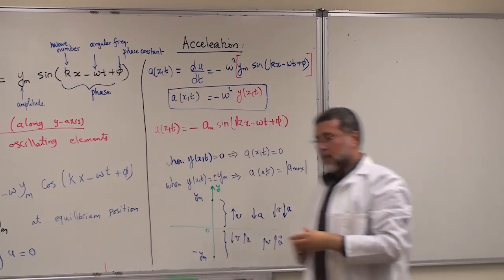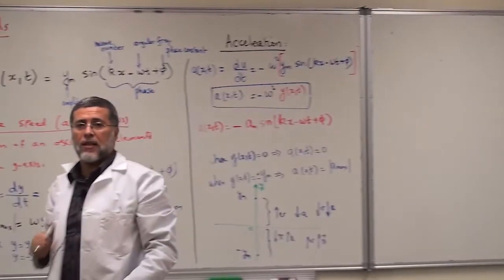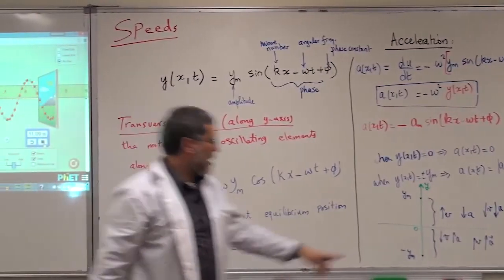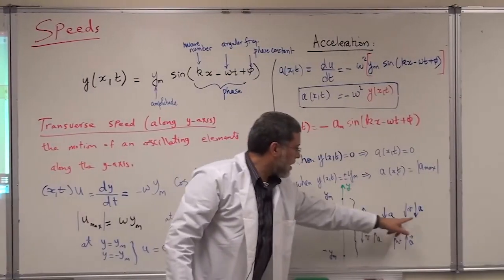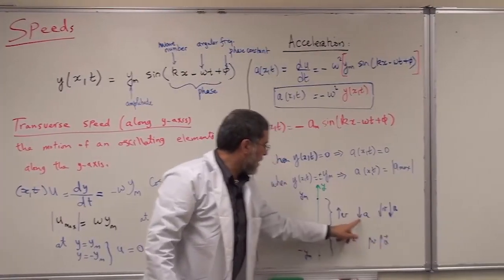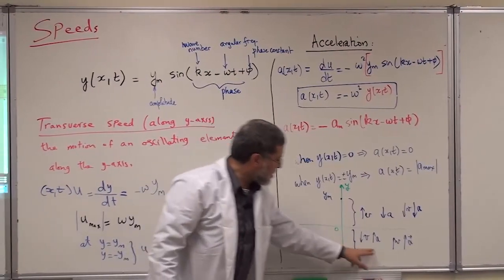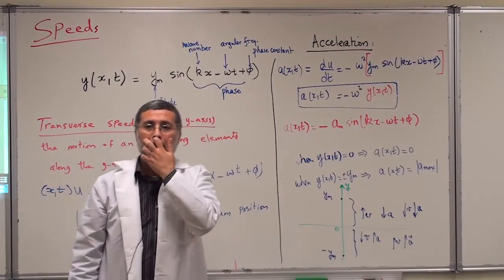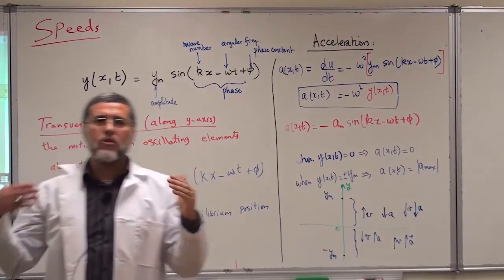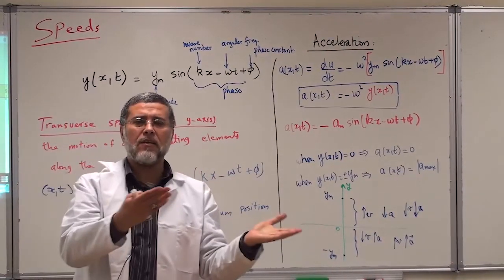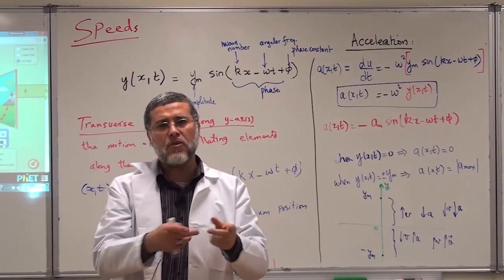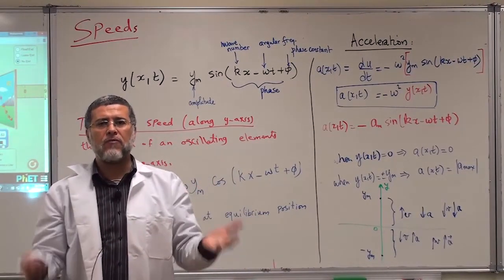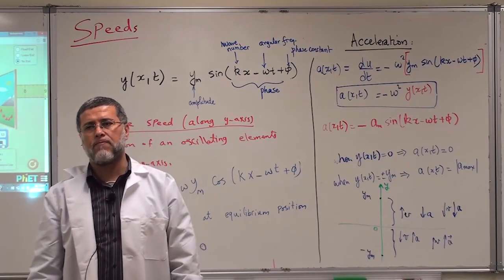I hope this is clear. The acceleration is a vector — it has a direction. It is negative in the positive y region and positive in the negative y region. We should know that when the object is accelerating, the acceleration and velocity are in the same direction. When the object is decelerating, the acceleration and velocity are in opposite directions.